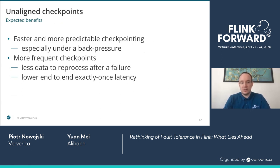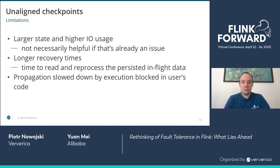The expected benefits are simple: faster and more predictable checkpointing, especially under back pressure. More frequent checkpointing means less data to reprocess after a failure and lower end-to-end exactly-once latencies. The limitations are also straightforward: in-flight data must be persisted somewhere, which increases IO usage and might not help if your job is already struggling with IO. Another drawback is increased recovery times, as the job will need to reprocess persisted data first before accepting anything new. Also, if Flink is stuck in user code, this will slow down checkpoint barrier propagation even for unaligned checkpoints.